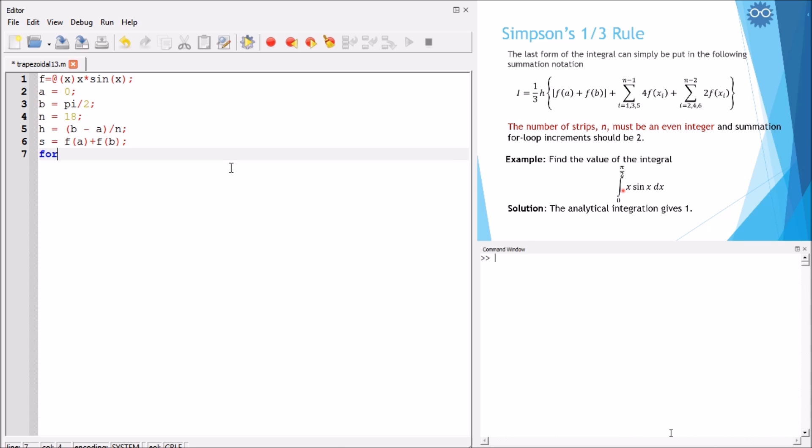And then we start our for loop for i equals to 1, step 2, up to n minus 1, because it should be odd numbers. And we can say s equals to s plus 4 multiplied by f of a plus i multiplied by h. This is the first loop.